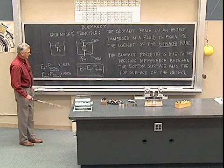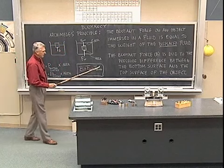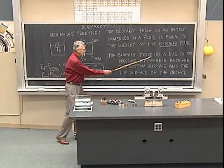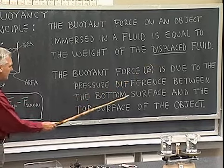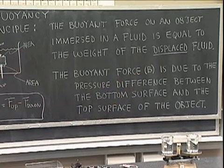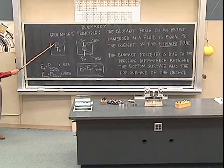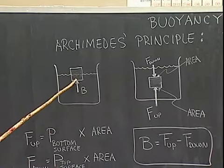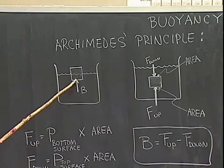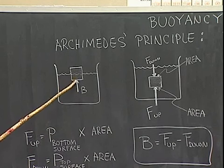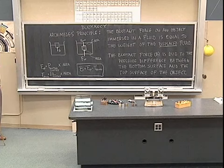In terms of Newton's laws, the buoyant force — we designate it B — is due to the pressure difference between the bottom surface and the top surface of the object. The diagram here shows an object floating on top of the fluid, partly below and partly above, and there's a force of pressure from below that buoys the object up, supplying the buoyant force to counter the gravitational tendency to fall to the bottom.